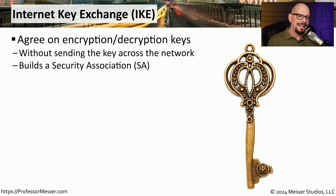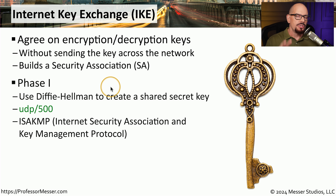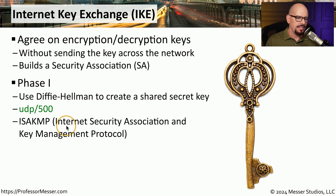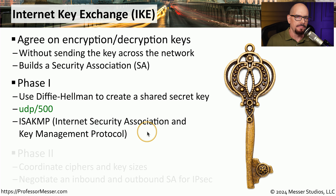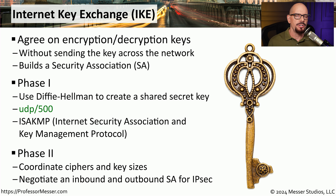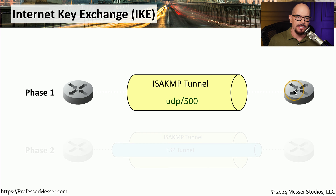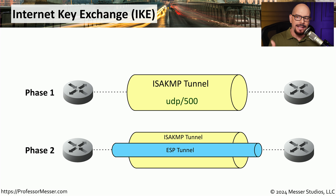We refer to this agreement as a security association, or SA. There are two phases to this key exchange process. The first phase commonly uses Diffie-Hellman to create a shared secret key for both sides of the conversation, operating over UDP port 500 — referred to as ISAKMP, the Internet Security Association and Key Management Protocol. In phase two, we coordinate which cipher to use, the key sizes, and negotiate both the inbound and outbound security association for the IPSEC tunnel. Visually, phase one builds the ISAKMP tunnel over UDP port 500, and phase two includes the encrypted data over the ESP tunnel.